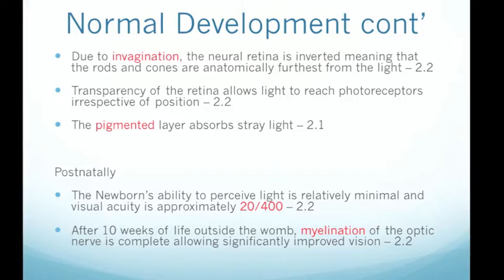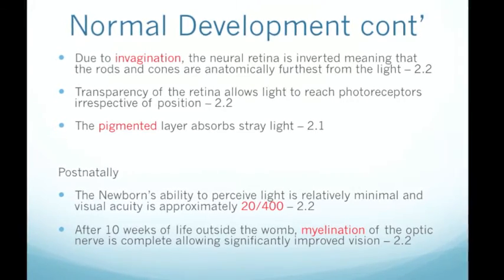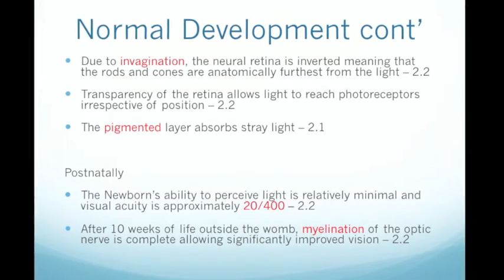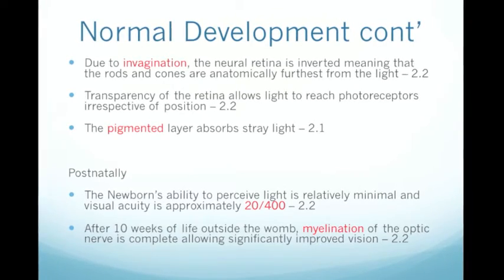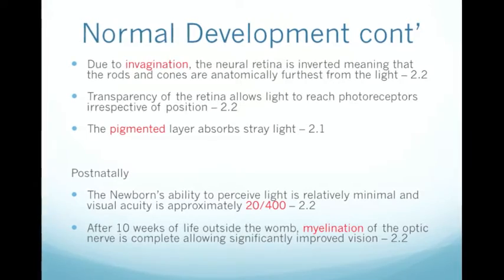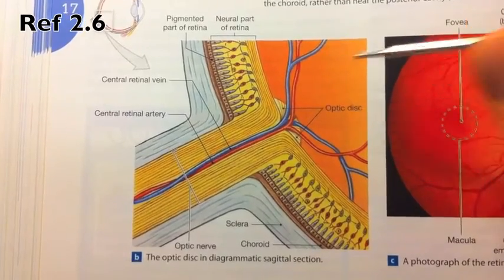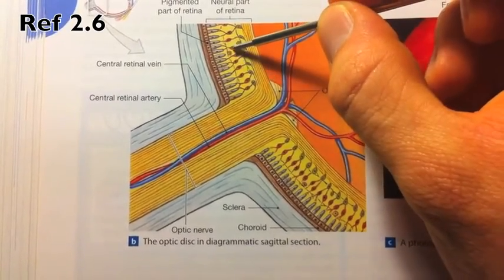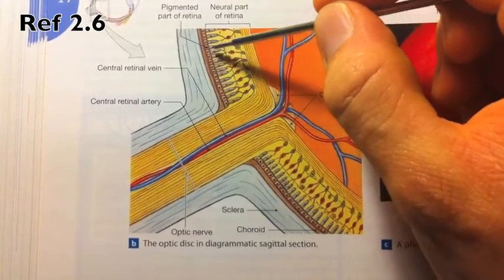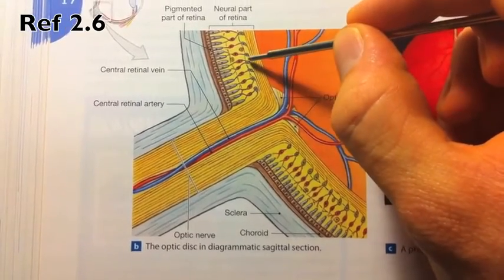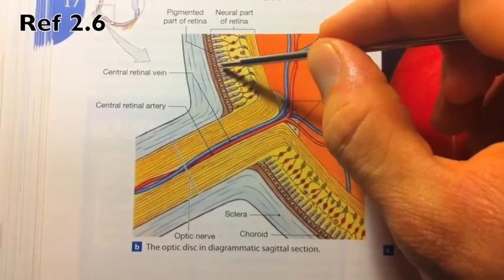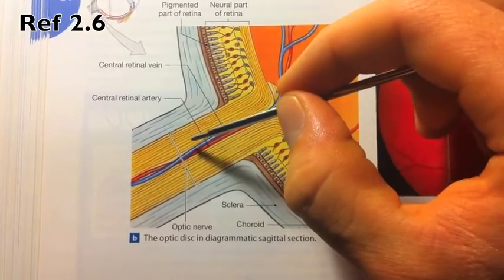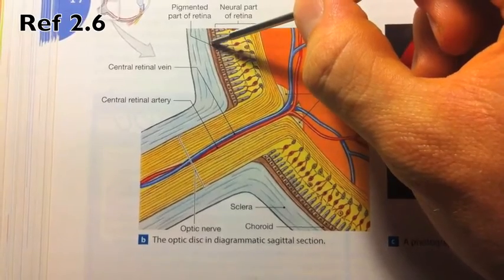Due to invagination — an ingrowth of cells from the surface layer — the neural retina is inverted, meaning that the rods and cones are anatomically furthest from the light. Transparency of the retina allows light to reach the photoreceptors irrespective of their position, while the pigmented layer absorbs stray light. The ganglion and bipolar cells must be transparent so light can interact with the photoreceptors. Nerve fibers from the ganglion cells make up the optic nerve.